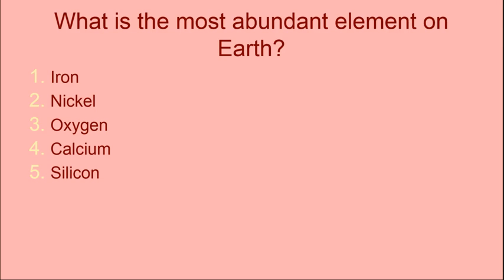Here's your first question: what is the most abundant element on Earth? This might come as a surprise — it turns out that it's actually oxygen. Oxygen is found in lots of compounds and molecules; it's pretty much everywhere. So that is the answer.